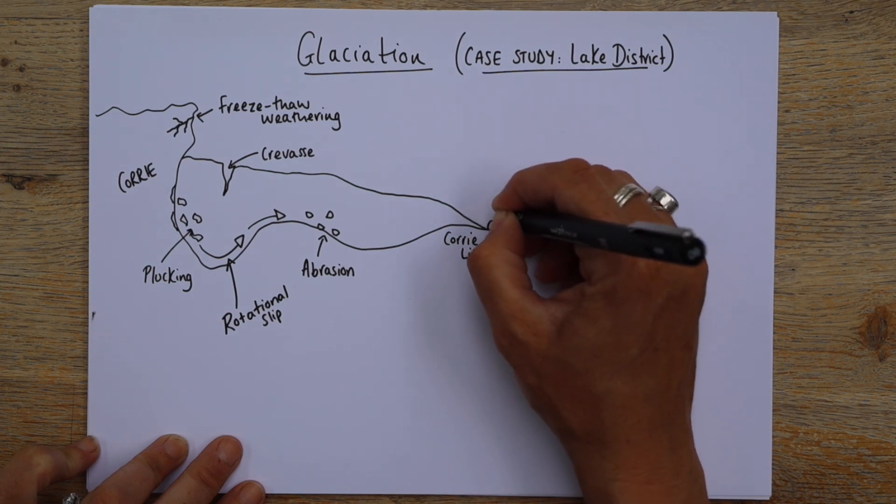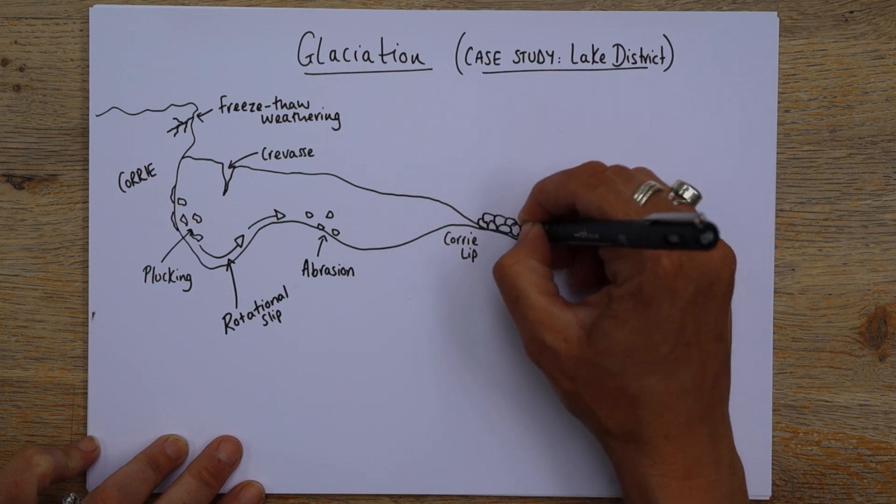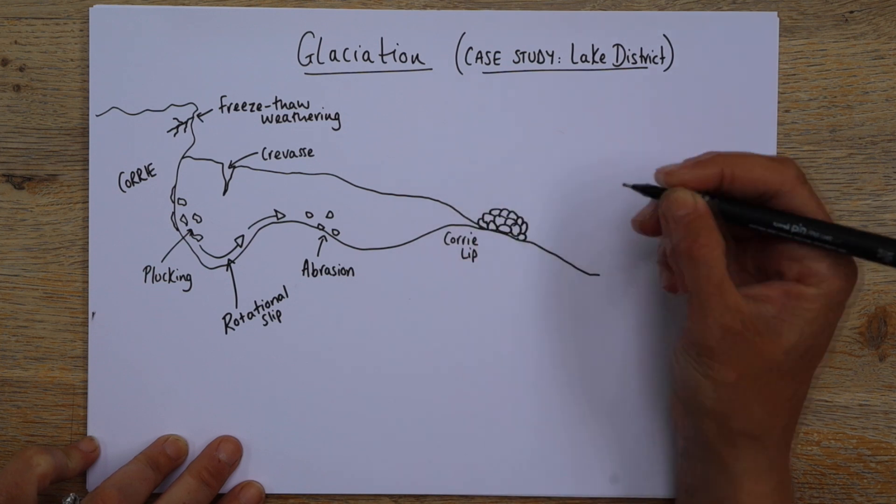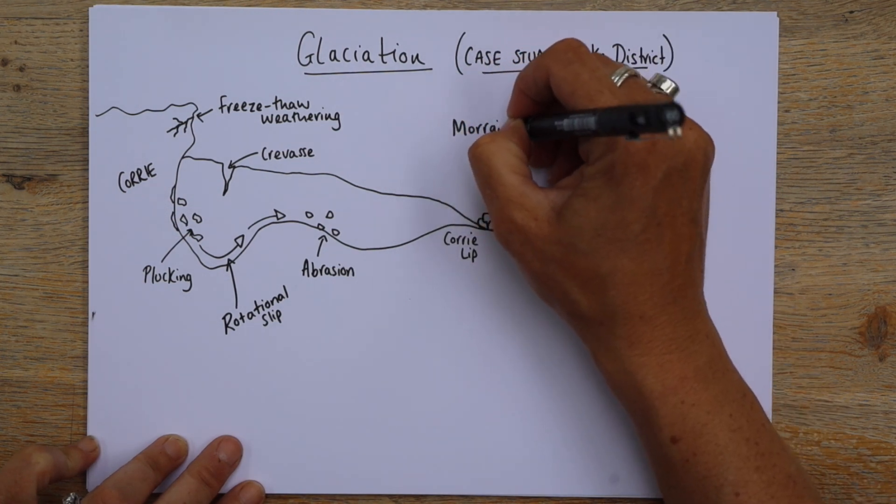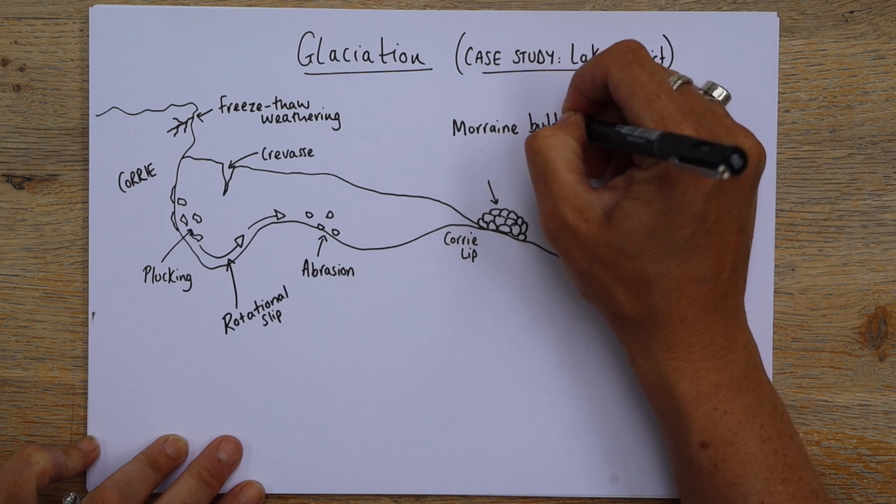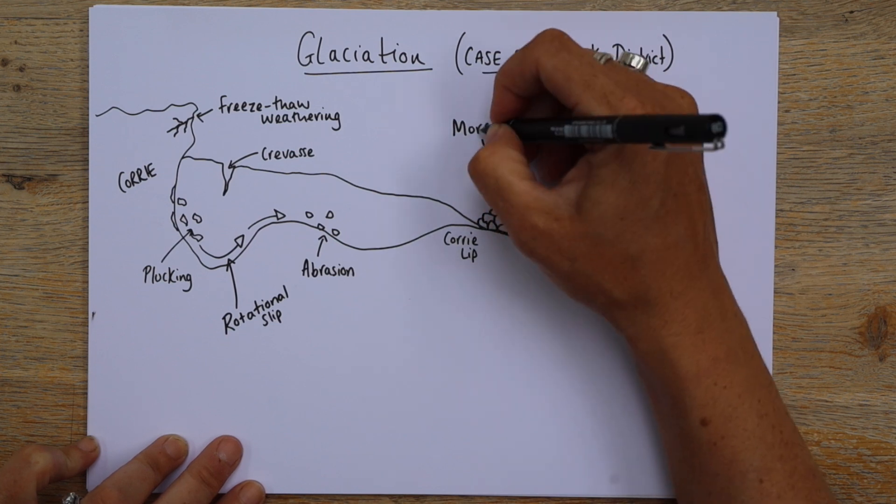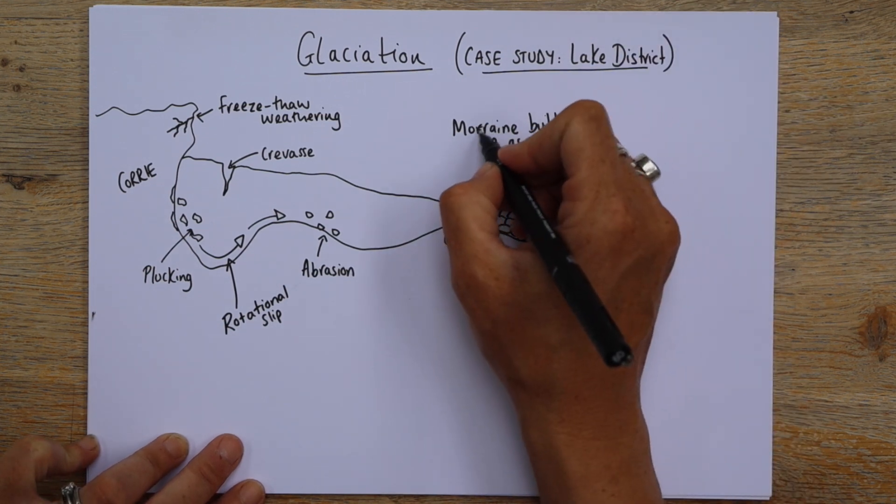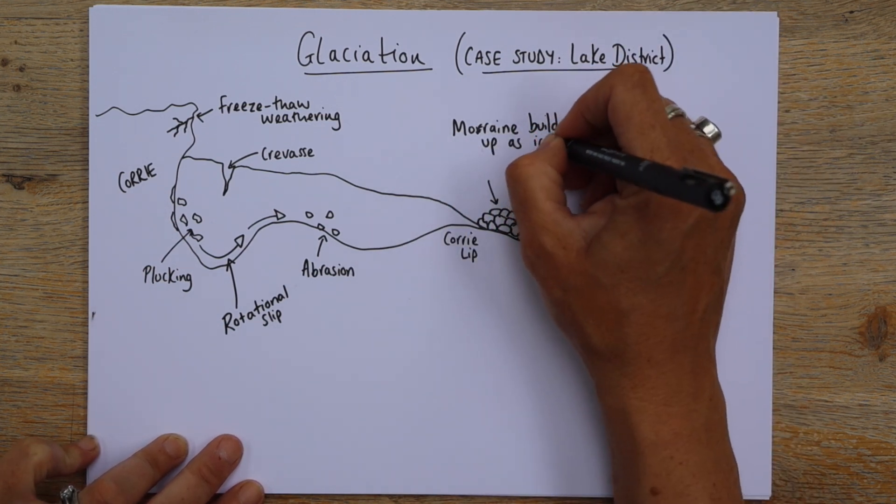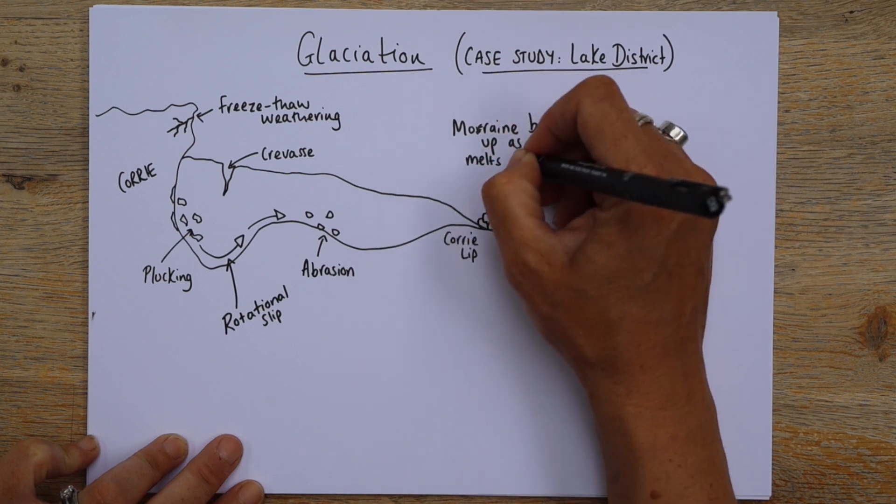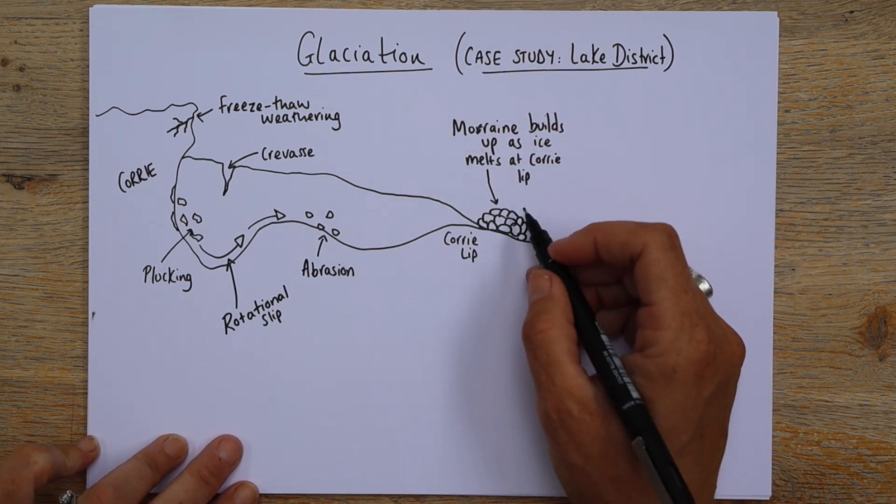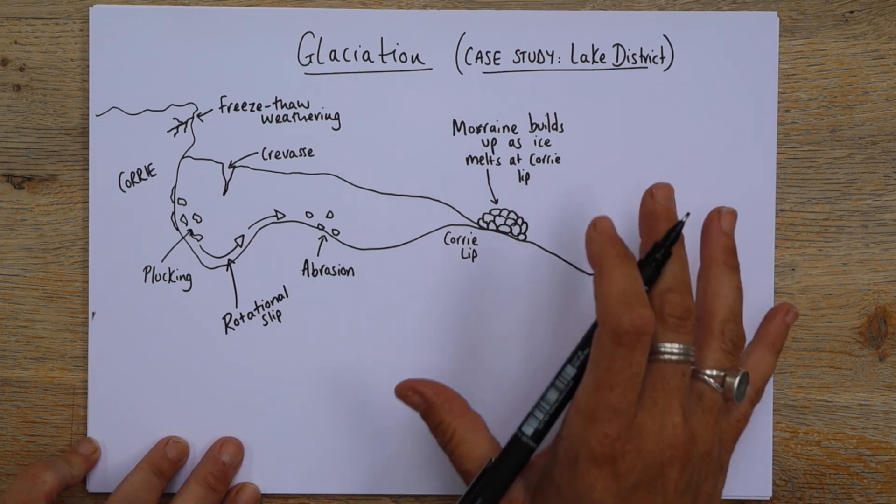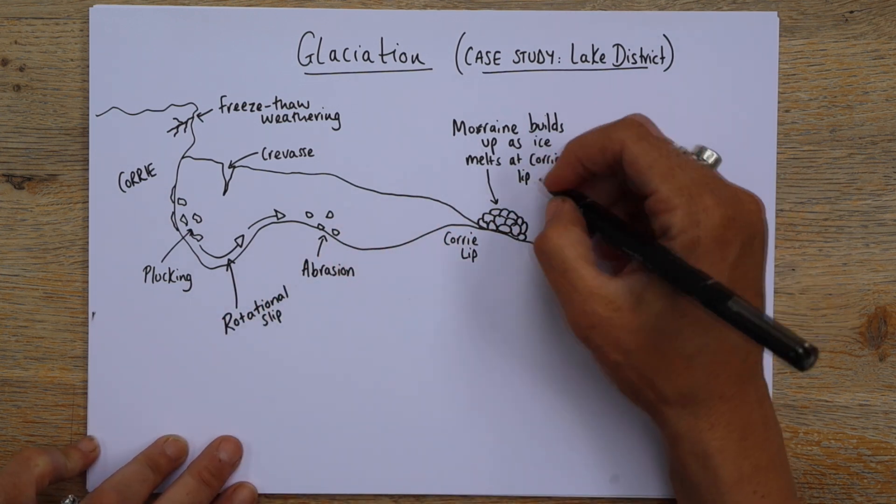It's kind of where the ice is melted and you can get something called a moraine. So if you just draw lots of, well, moraine is anything that the glacier has moved, okay, any material moved by the glacier. So if you put an arrow to that and if you write, moraine builds up as ice melts at Cori lip. Okay. So basically as the ice is melted, it leaves behind all of this material. And moraine, remember, is anything that is left behind by or moved by the glacier, any material.